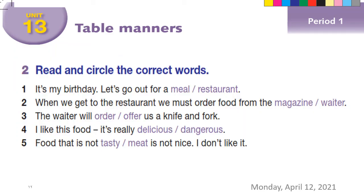Now let's move to this exercise and try to answer the questions. 'It's my birthday — let's go out for a meal at a restaurant.' When we get to the restaurant, we must order food from the waiter. The waiter will offer us a knife and fork. 'I like this food — it is really delicious.' Food that is not tasty — I don't like it.